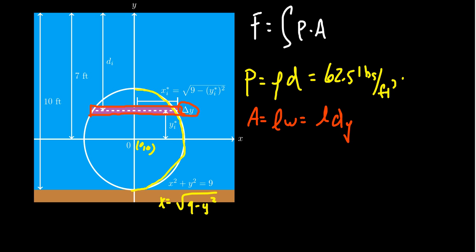How does one determine the length? If we use the symmetry of the circle and take this point x comma y, x is the distance from the y-axis to this point. The entire length is going to be 2x. So making that observation, we're going to get 2x dy.